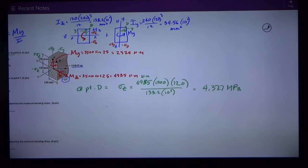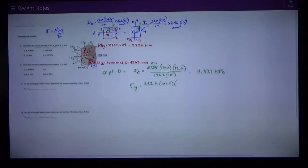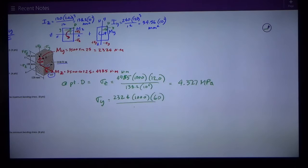σy is the y moment of 2324 times a thousand to get my units. Y distance is the distance from the y neutral axis so that's half of its width, its width is 120 so that distance is 60. And Iy is 34.56 × 10⁶. That works out to be 4.035 megapascals.